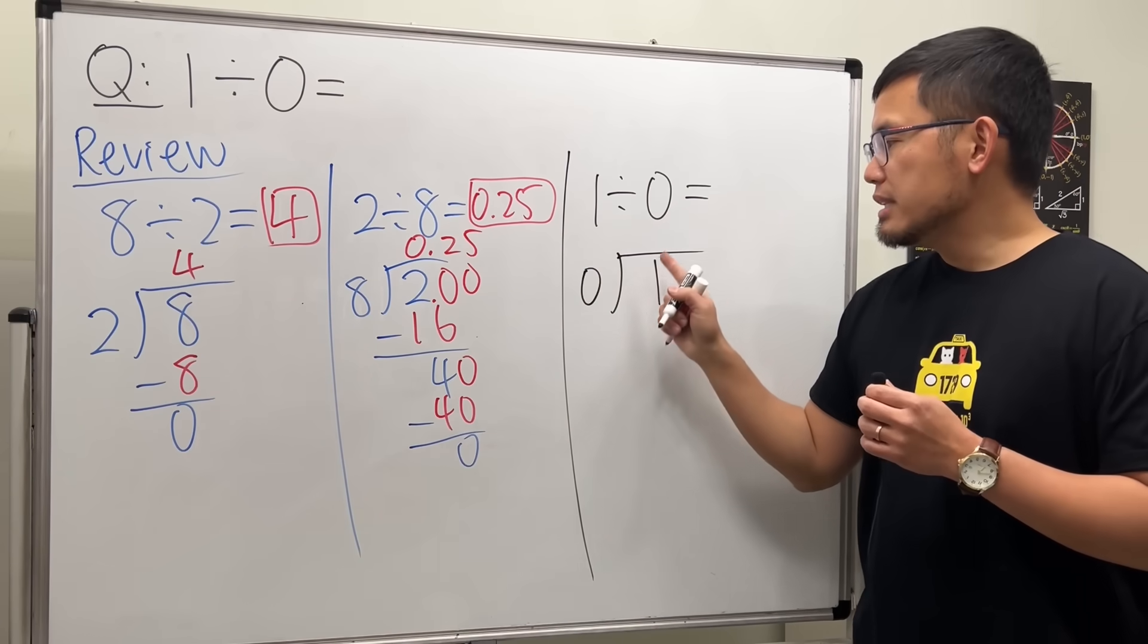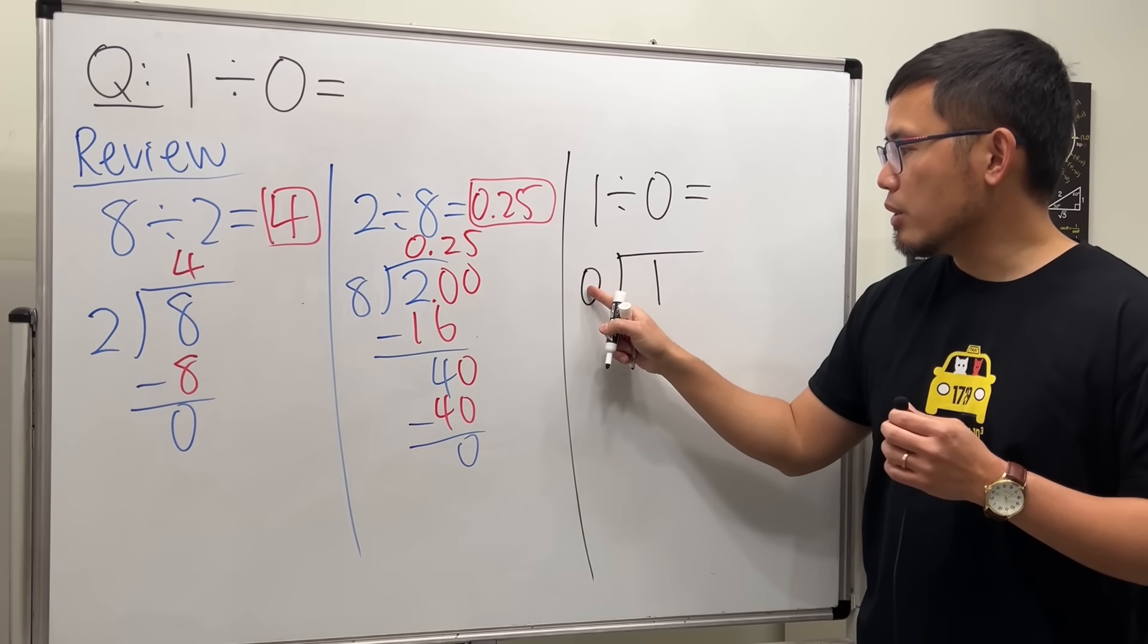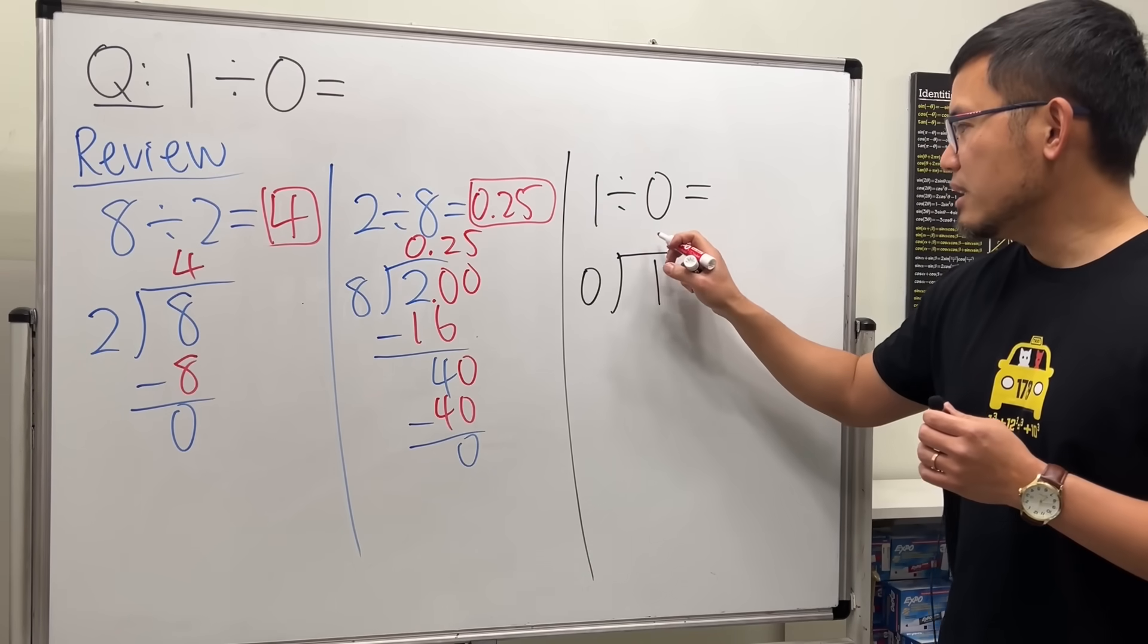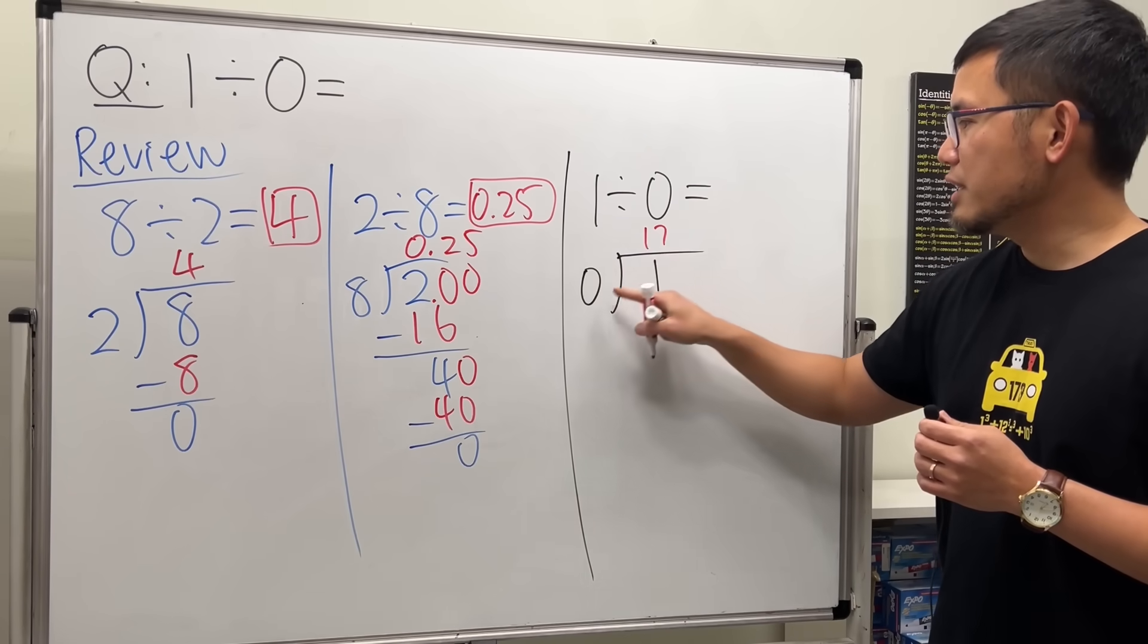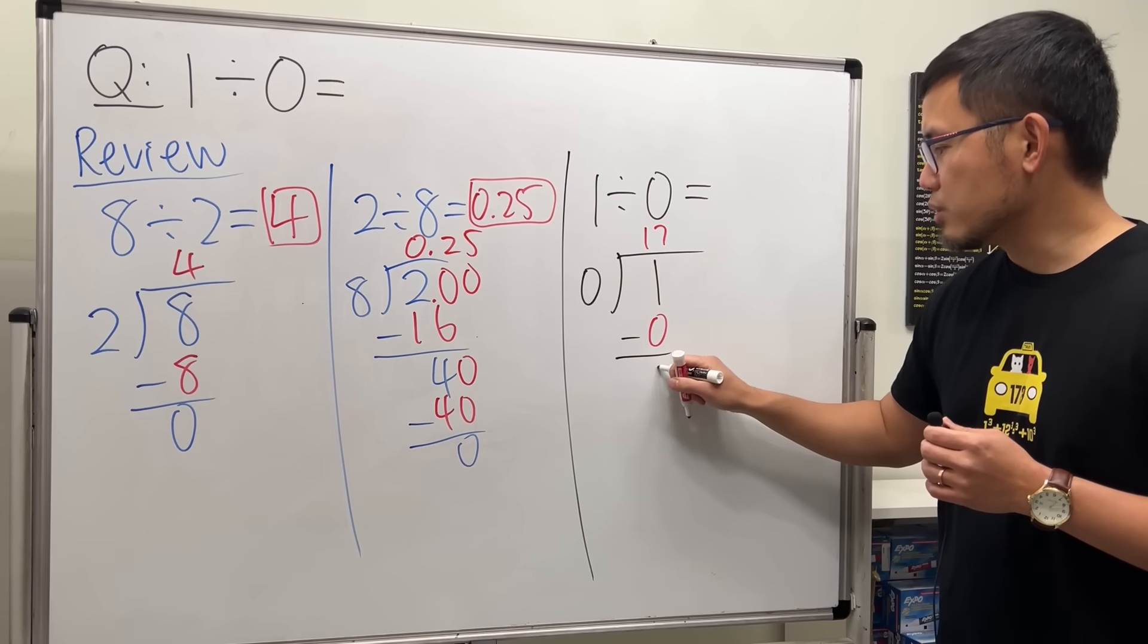Well, is it possible for us to think about a number and it multiplies to 0 and we get 1? Can we do that? Can we say the answer is, let's say, 17. 17 times 0 is what? Still 0. And if you subtract, 1 minus 0 is 1.